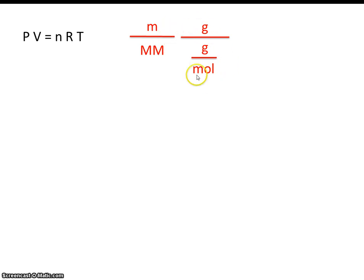Now what can we cancel out here? Well, you remember from math class that we can take the reciprocal of this and multiply it. So instead of grams per mole, let's multiply by moles per gram.